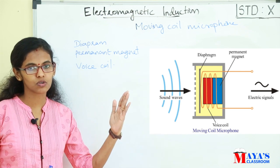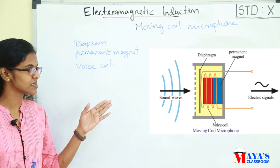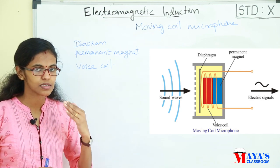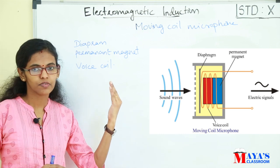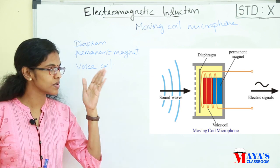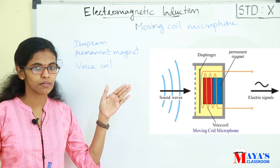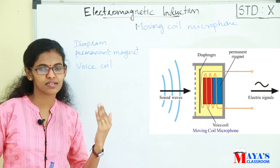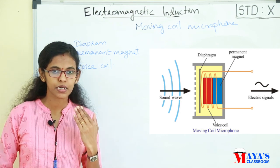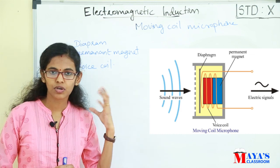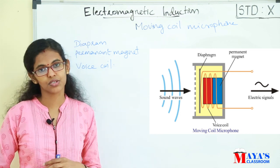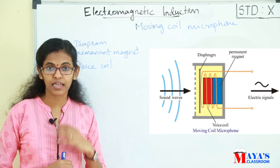The diaphragm is connected to the voice coil. When sound signals fall on the diaphragm, the diaphragm vibrates. The voice coil, which is attached to the diaphragm, also vibrates. The voice coil is situated in the magnetic field of a permanent magnet.